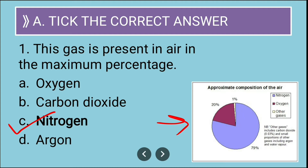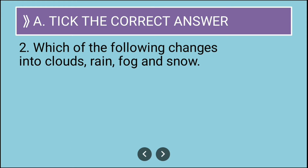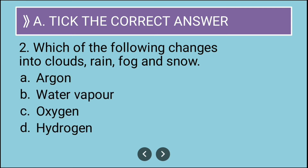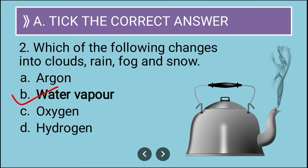The next question is: which of the following changes into clouds, rain, fog, and snow? Options are argon, water vapor, oxygen, or hydrogen. The obvious answer for this question is water vapor, as we all know that water vapor gets converted to clouds, rain, fog, and snow.